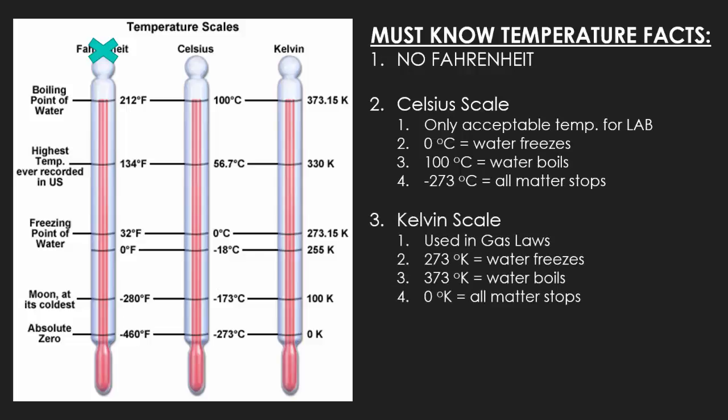The Kelvin scale, which is going to be used in our gas laws formula later on in the year, will have bigger numbers than the Celsius scale. Kelvin is predominantly used for gas, anything in outer space, or star and sun temperatures. At 273 Kelvin, water freezes; at 373 Kelvin, water boils.